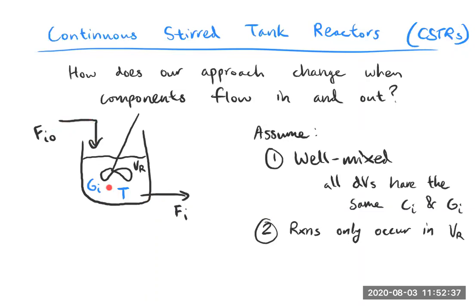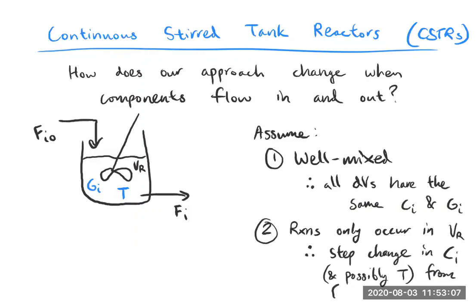Therefore, there is a step change in concentration Ci — and possibly temperature T — from the feed to the reactor. For example, two components might come in at 300°C while your reactor is at 400°C, so there's a step change that occurs instantaneously right at the reactor inlet. The third assumption is steady state.